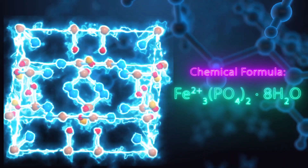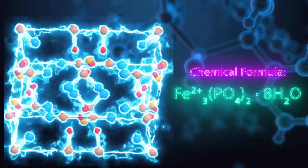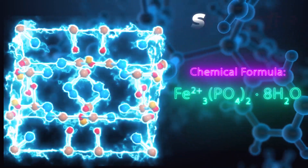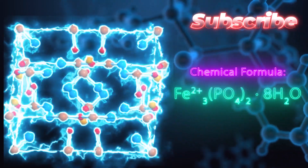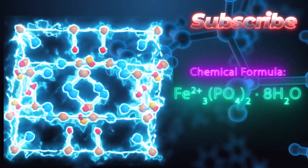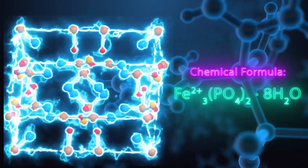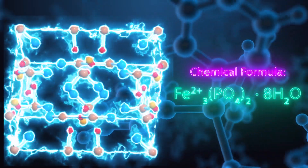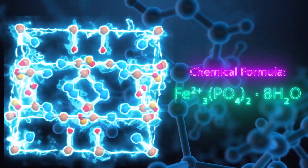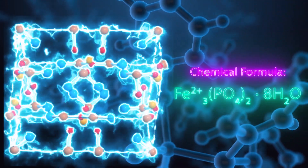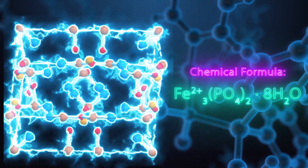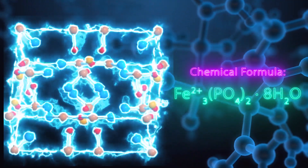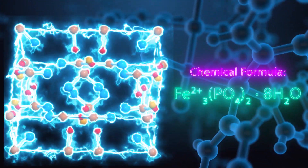Vivianite forms part of the phosphate group of minerals. It is composed of three iron two-plus ions, two phosphate ions, and a total of eight water ligands, making it a complex compound.